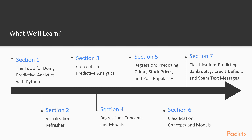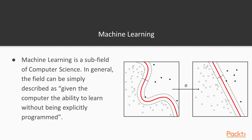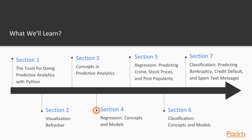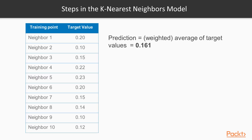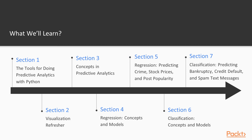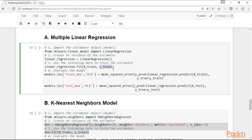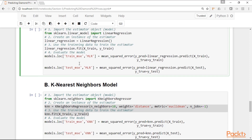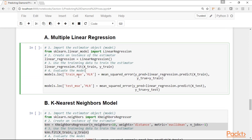In the third section, we will discuss the main concepts in predictive analytics, which is a very technical subject, and to be able to use it successfully in practice, we need a firm grasp of the main concepts. In the fourth section, we will talk intuitively about some of the foundational concepts and models for regression tasks, and then in the next section, we apply everything that we learned in specific real-world problems and datasets. We will build models for predicting diamond prices, violent crime, and post popularity.